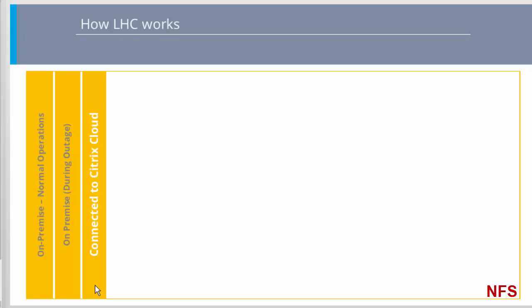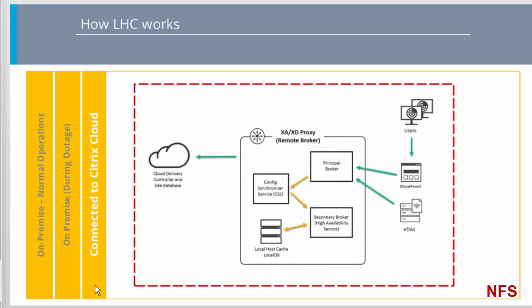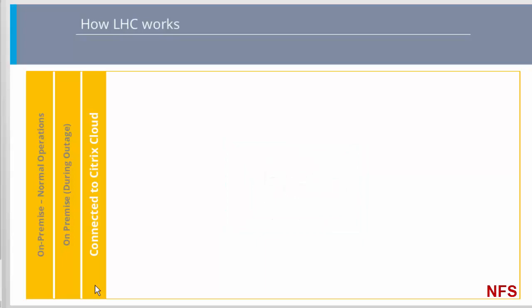So how does LHC work in an environment that is connected to Citrix Cloud? Where the Citrix environment includes a Citrix Cloud-based control plane, how LHC works is very similar to the on-premise operation. Citrix Cloud hosts the delivery controller, so instead of a local primary broker, there is a XenApp XenDesktop proxy, also called the remote broker. Its task is similar to that of the on-premise primary broker, in that it listens for StoreFront and VDA requests. The difference is that the proxy routes the request to the delivery controller in the cloud control plane. Synchronization of the cloud-based central database to the LHC local DB on the proxy occurs in the same way as in the on-premise case.